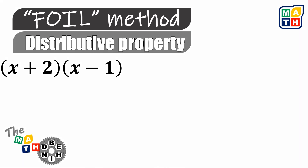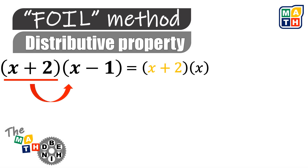Multiplying these two binomials allows us first to distribute the first binomial expression to all the terms inside the second binomial expression. We are going to distribute x plus 2 to x and then to negative 1.